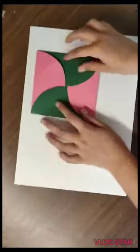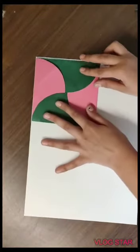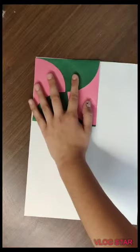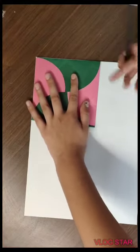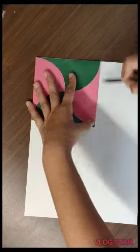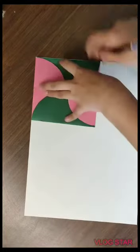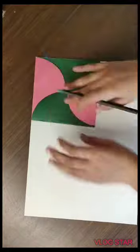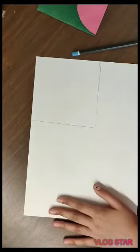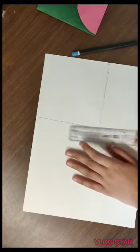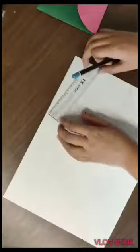Now we have taken a white sheet and on that we are going to outline this, the card which we have made. And after outlining we will take a scale and we will mark one centimeter inside of the square which we have made.